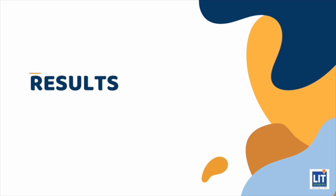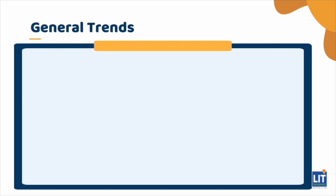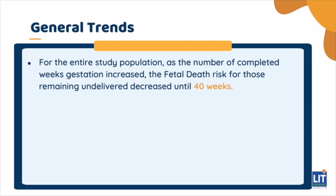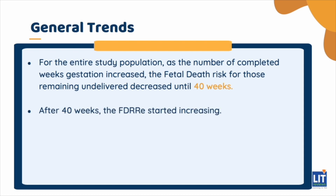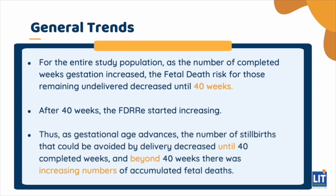We will now look at the results of the analysis carried out. For the entire study population, as the number of completed weeks gestation increased, the fetal death risk for those remaining undelivered decreased until 40 weeks. After 40 weeks, the fetal death risk for remaining undelivered started increasing. Thus, as gestational age advances, the number of stillbirths that could be avoided by delivery decreased until 40 completed weeks, and beyond 40 weeks there was an increasing number of accumulated fetal deaths.